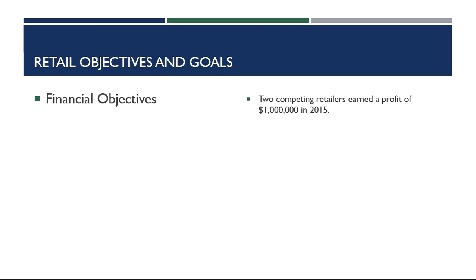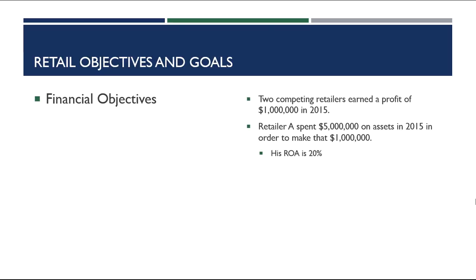Imagine that we have two competing retailers and they each earned a profit of $1 million in 2015, so they both achieved their profitability goal. Retailer A had to spend $5 million on assets in order to make that $1 million in profit. That retailer's ROA is 20%. Retailer B also made a profit of $1 million in 2015, but he had to spend $40 million in order to make that $1 million.